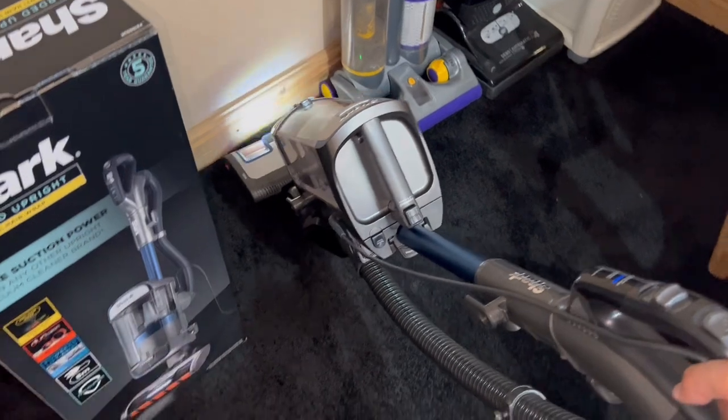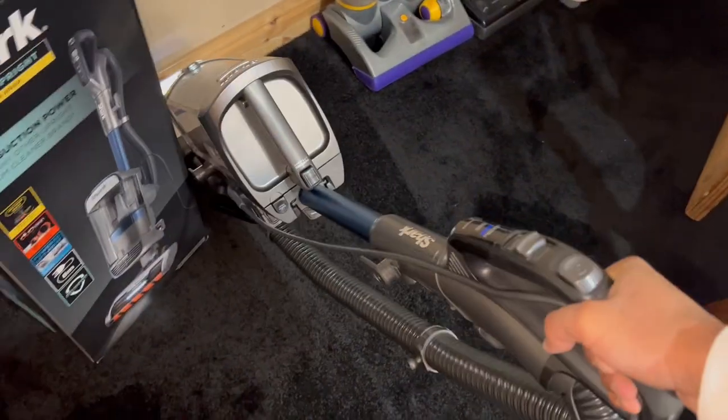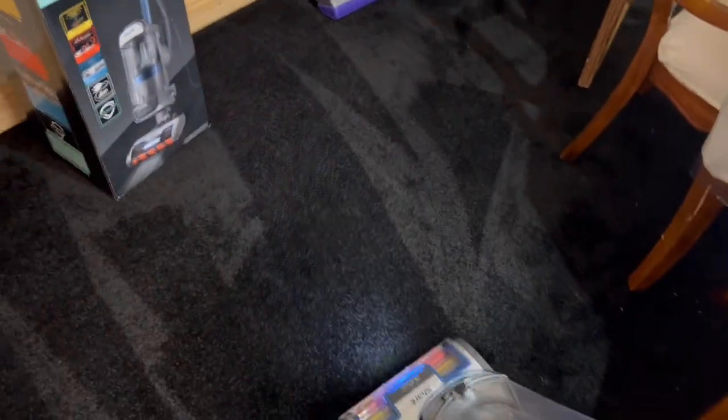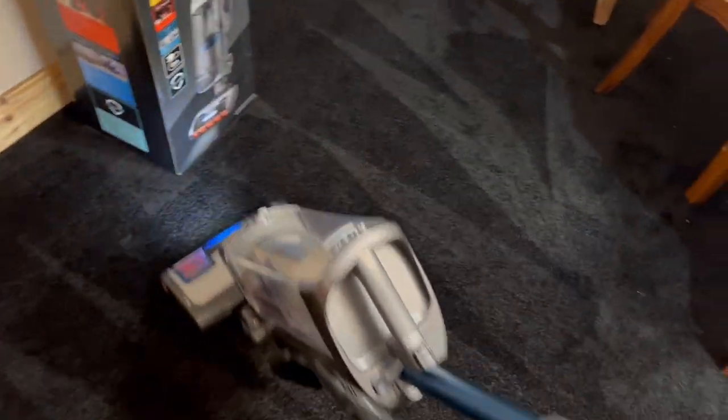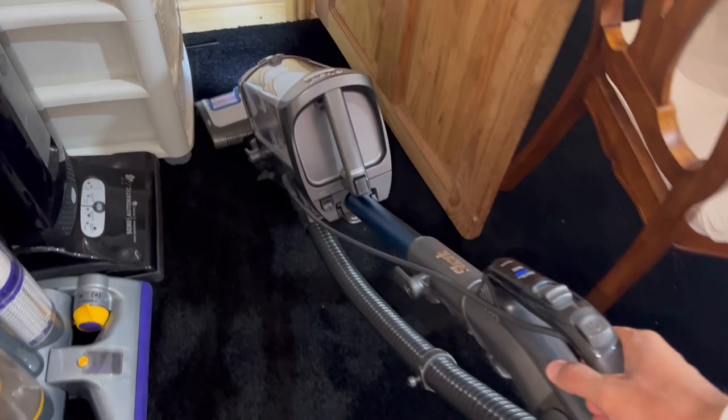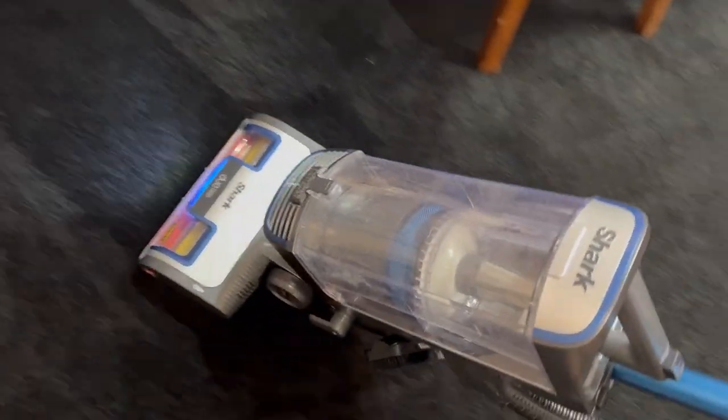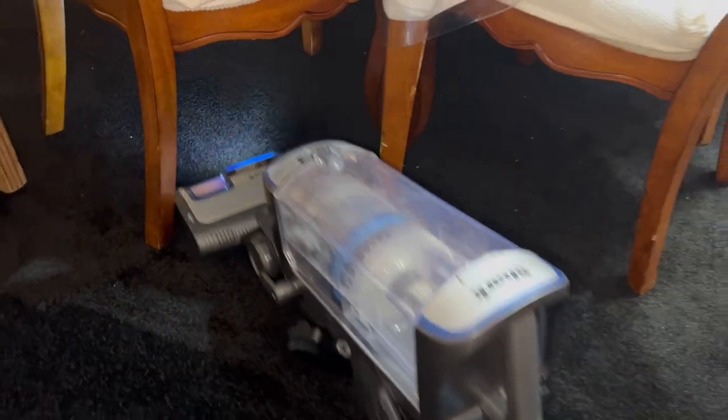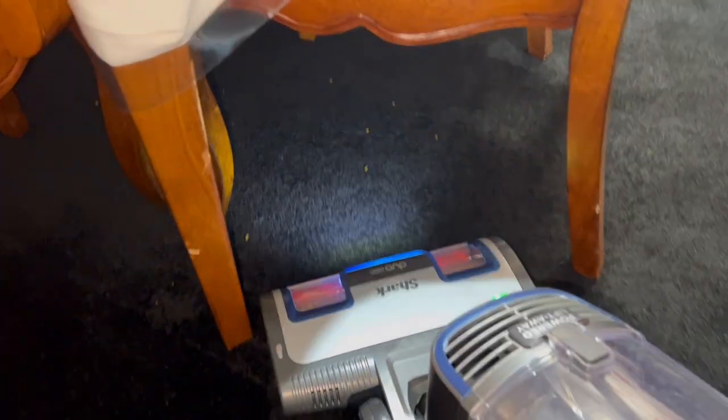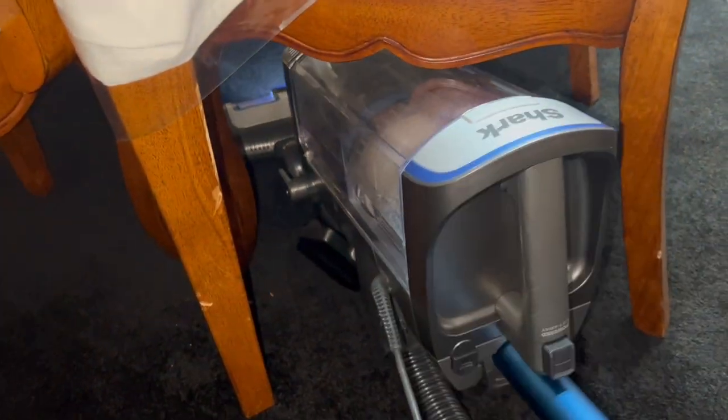Look at that. Most vacuums these days don't have stiff bristles. So if you've got pets with really stubborn pet hair or really stiff carpet piles that need a strong brush bar to lift the carpet pile up, this Shark is fantastic for that. Look at the headlights, illuminating all the dirt in the dark areas.